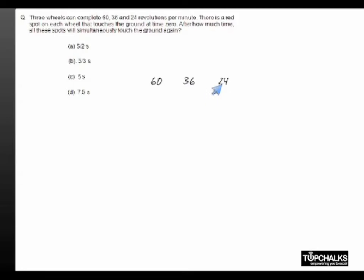36 and 24 revolutions respectively, which implies the time taken by the three wheels to complete one revolution is one second, 5 by 3 seconds and 5 by 2 seconds respectively.